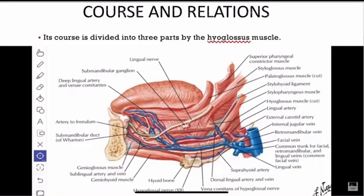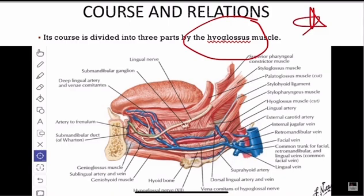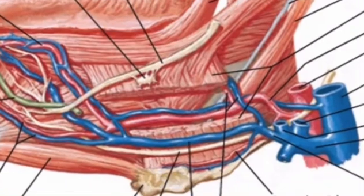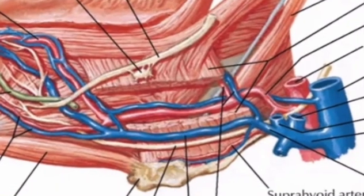Moving on to the course and relations of the lingual artery — it has a tortuous course. It is divided into three parts by a muscle: the hyoglossus muscle. This is an important point. In the diagram, the hyoglossus muscle is cut so that the course of the lingual artery can be shown clearly.